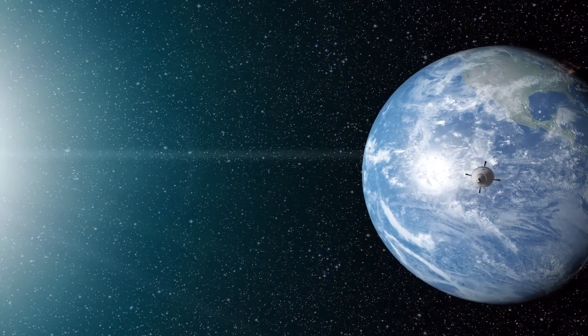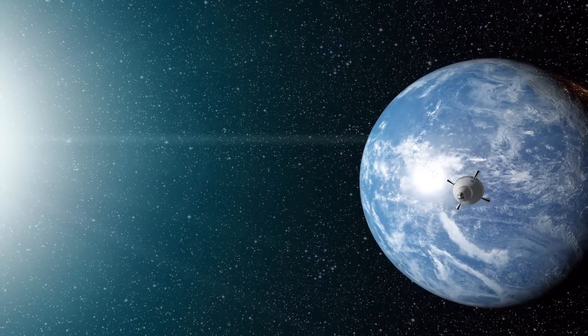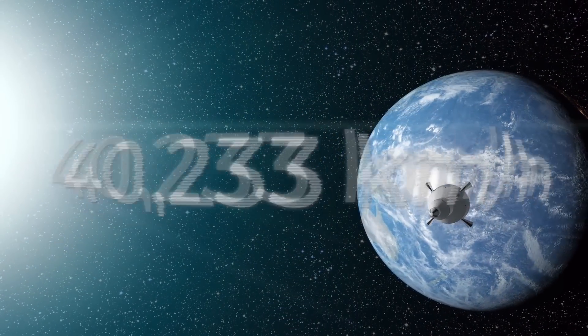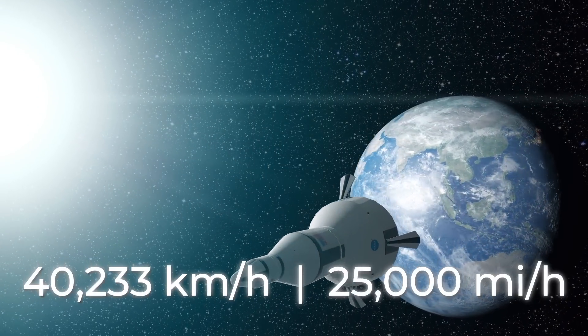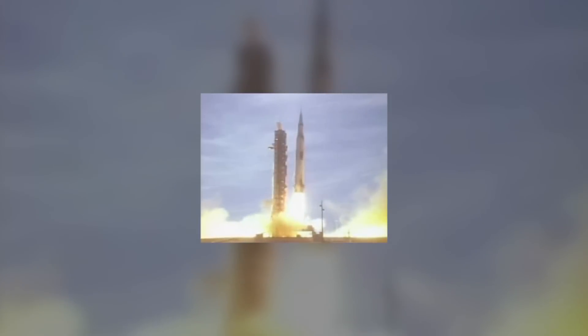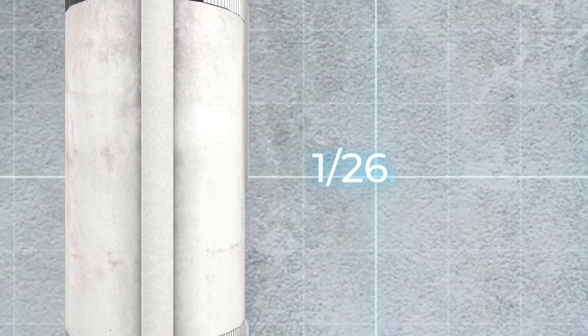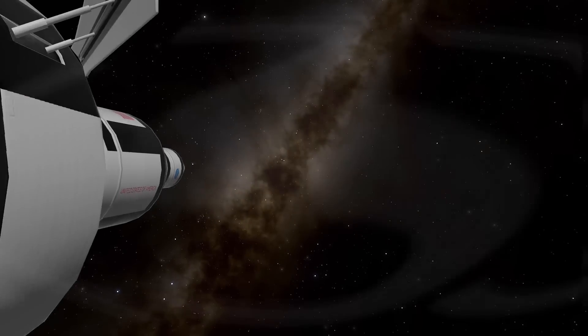The maximum speed achieved by the third stage of Saturn V was 40,233 km per hour, or 25,000 miles per hour. This is an absolute record among devices of this class. Only 1/26,000 the speed of light, and of course, almost 33 times the speed of sound.